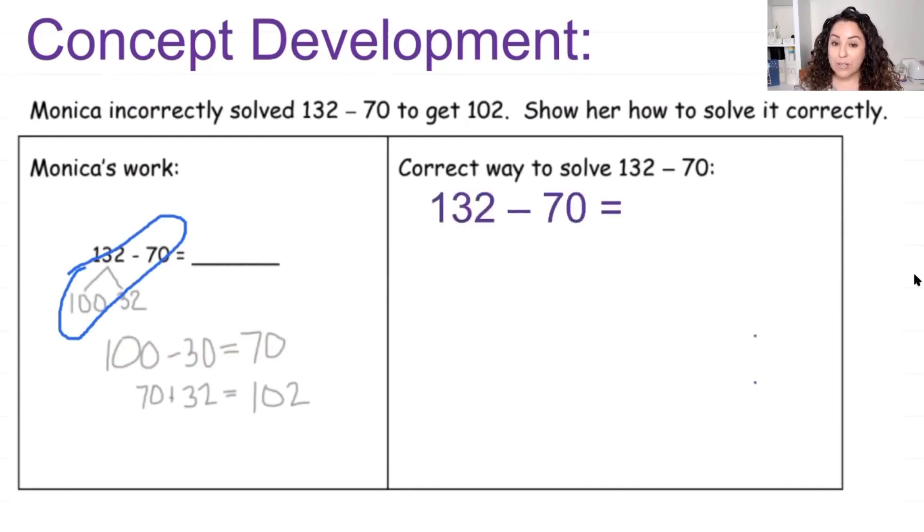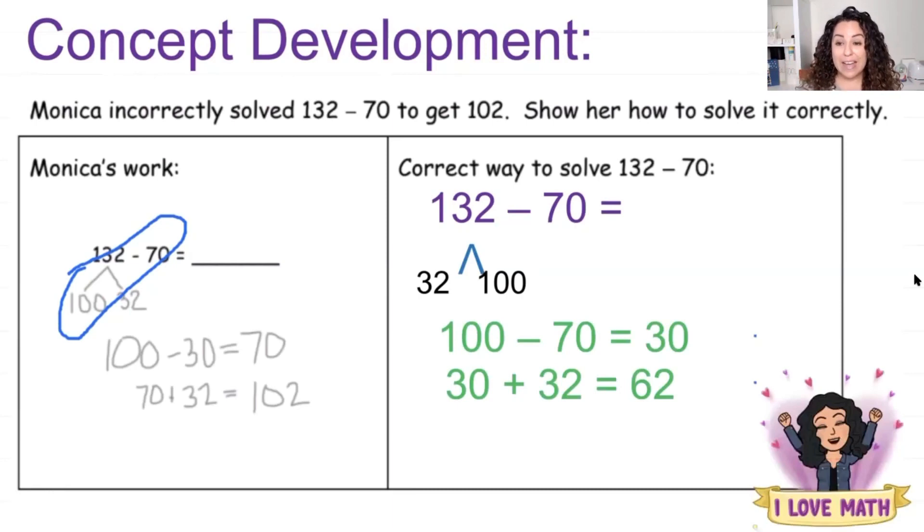Let's show her what she should have done. She should have started with 132 take away 70. And then you break it apart. She broke her number apart beautifully. She did 32 and 100. Now I put my 100 on the opposite side just because it was easier to group up with the 70. So now I have 100 take away 70 equals 30. So do you see how our next steps are a little different? And then let's see what my next step was. I have 30 plus 32 is equal to 62. So that means that 132 take away 70 is equal to 62. So I can see where Monica had a little problem, but hopefully with some help, she gets that fixed.